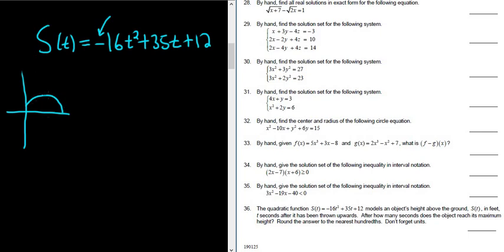The question wants to know the time it takes to reach this point here, the maximum height. So we can call that time t. And if you recall, this is called the vertex. And the vertex is (h, k). So the x-coordinate of the vertex, in this case the t-coordinate,